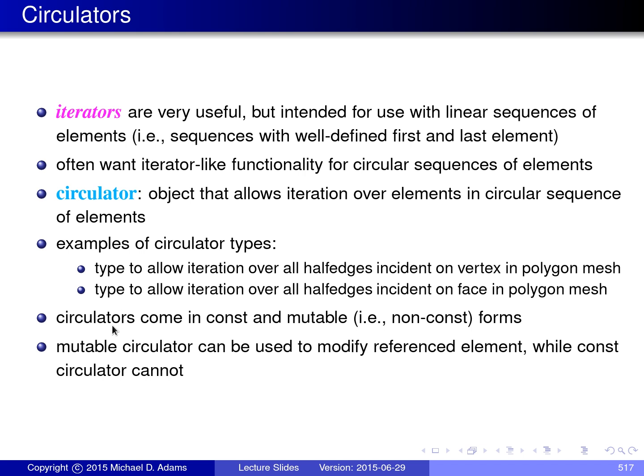Circulators come in both const and mutable forms. Just like iterators, there's const iterators, which can't be used to modify the object to which they refer, and then non-const iterators, sometimes called mutable iterators, which are allowed to modify the thing that they refer to. We have a similar notion with circulators. We have const and mutable forms. And the mutable circulator can be used to modify the element that it references, while a const circulator cannot. And in order to write const correct code, you have to be careful to use mutable circulators where you need them and const circulators where you need them.